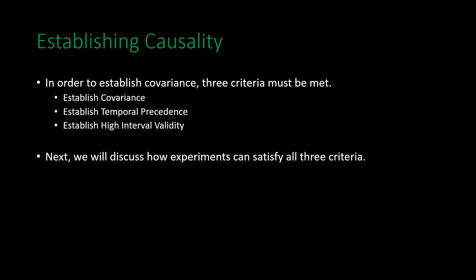Before jumping into covariance and experiments, let's refresh on establishing causality. To establish causality, one must meet three criteria: first, establish covariance between the variables of interest; second, establish temporal precedence, meaning the causal variable comes before the outcome variable; and third, establish high internal validity by ruling out as many possible alternative explanations as possible. We will now discuss how experiments satisfy all three criteria.